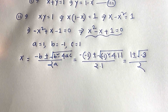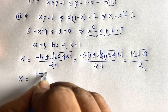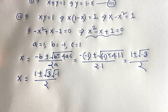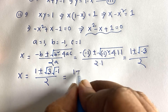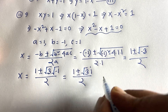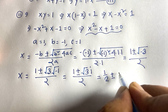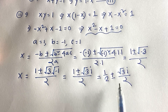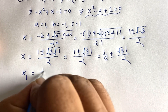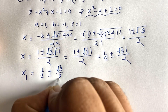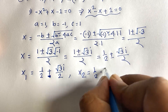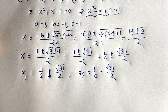So we have x equals 1 plus or minus square root of (−3), over 2. Since square root of minus 1 equals i, we write square root of minus 3 as square root 3 times i. Therefore x equals (1 plus or minus √3·i) / 2, which gives x₁ equals 1/2 plus (√3/2)·i and x₂ equals 1/2 minus (√3/2)·i.